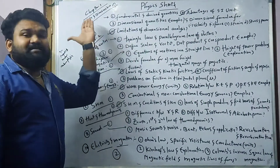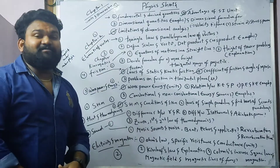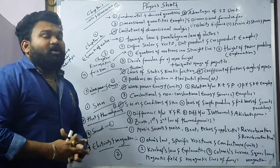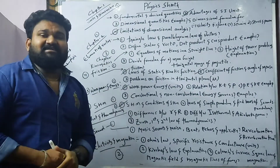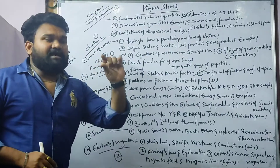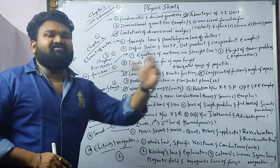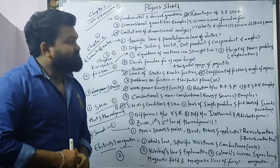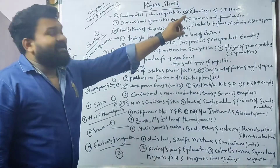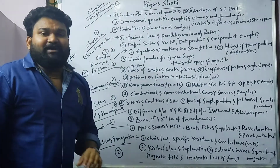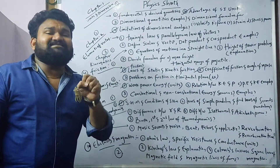In the first chapter, you have units and dimensions. It is short. What is a fundamental physical quantity and what is a derived physical quantity? Then, the second question is advantages of SI unit — that is, system of international units.